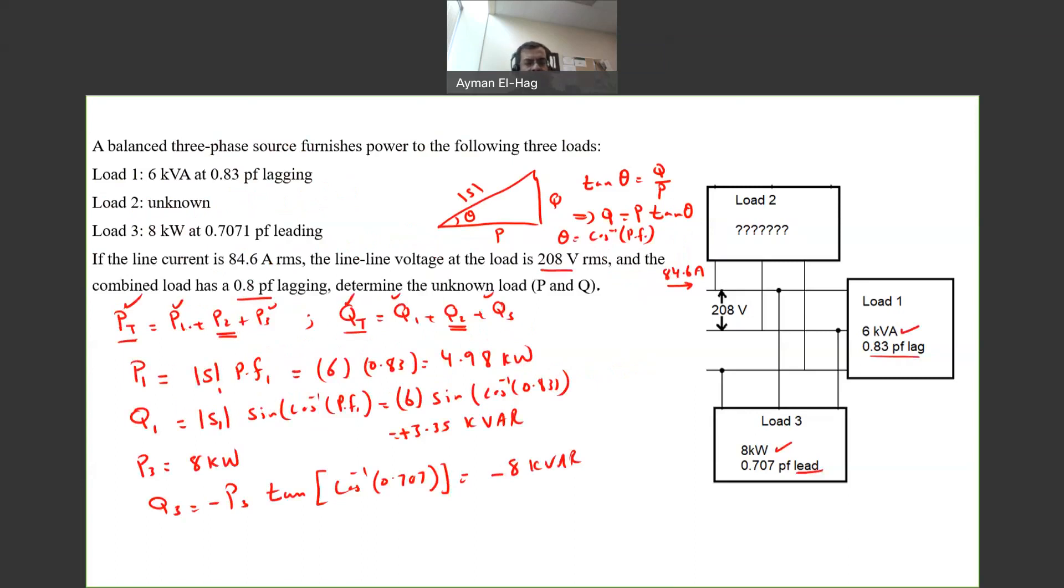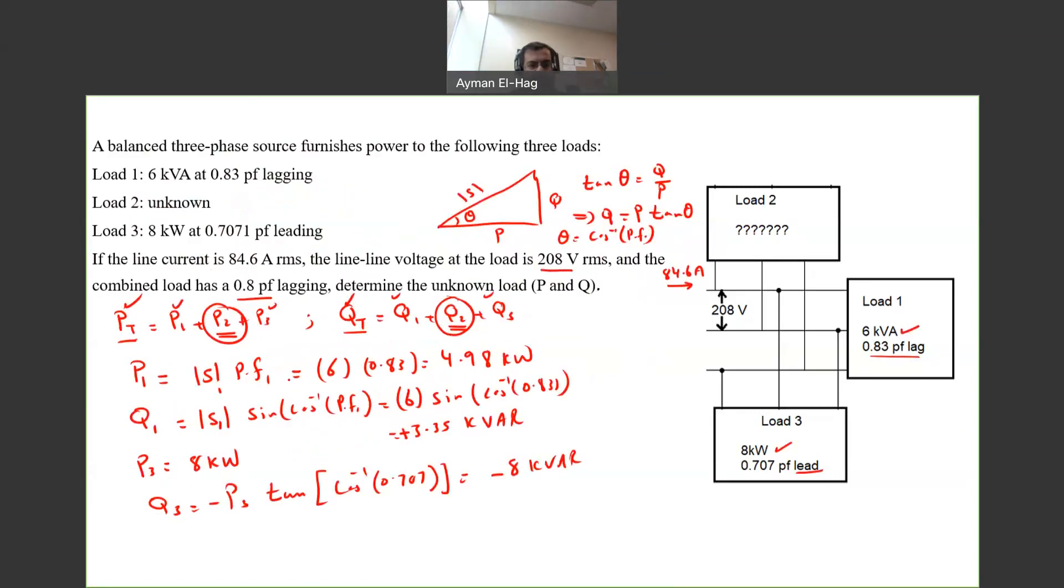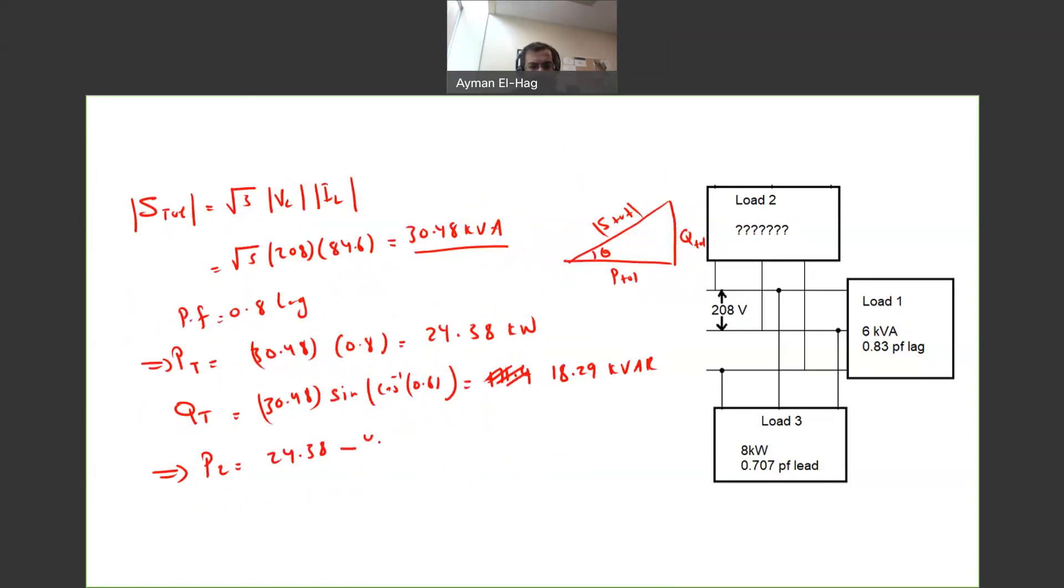Now I am done. I know P total, Q total, Q1, Q3, P1, and P3. So everything is known to me. I can find P2 and Q2. Your P2 equals 24.38, the total one, minus the value of P1, which is 4.98, minus 8.